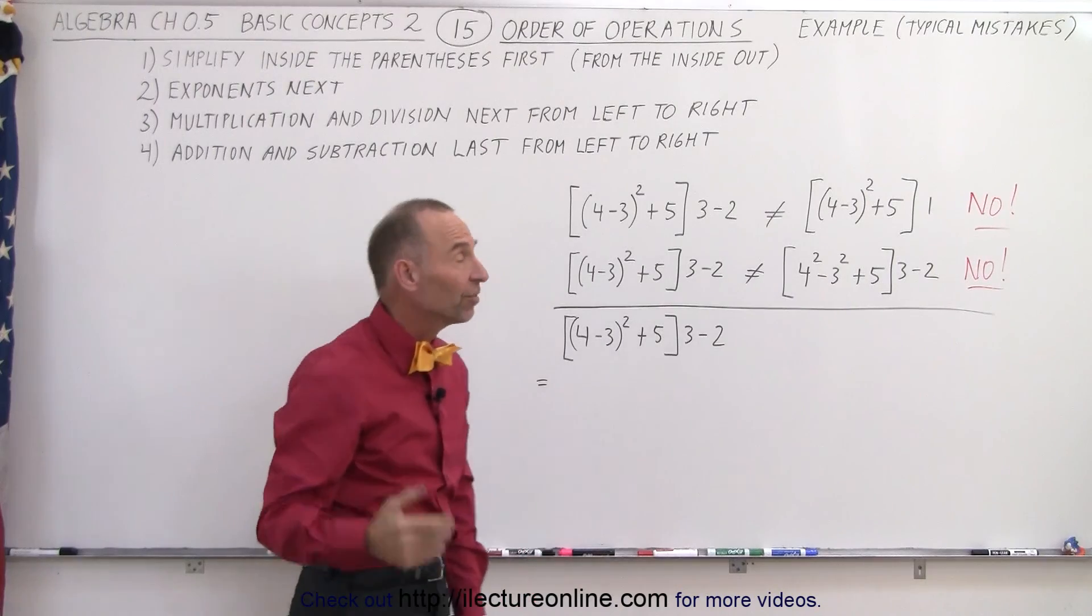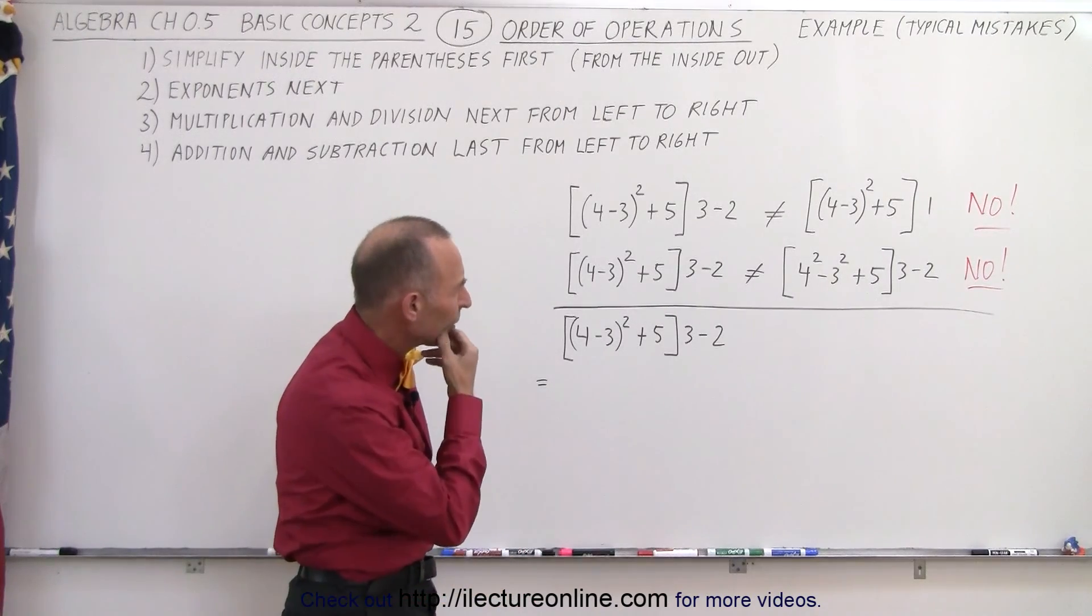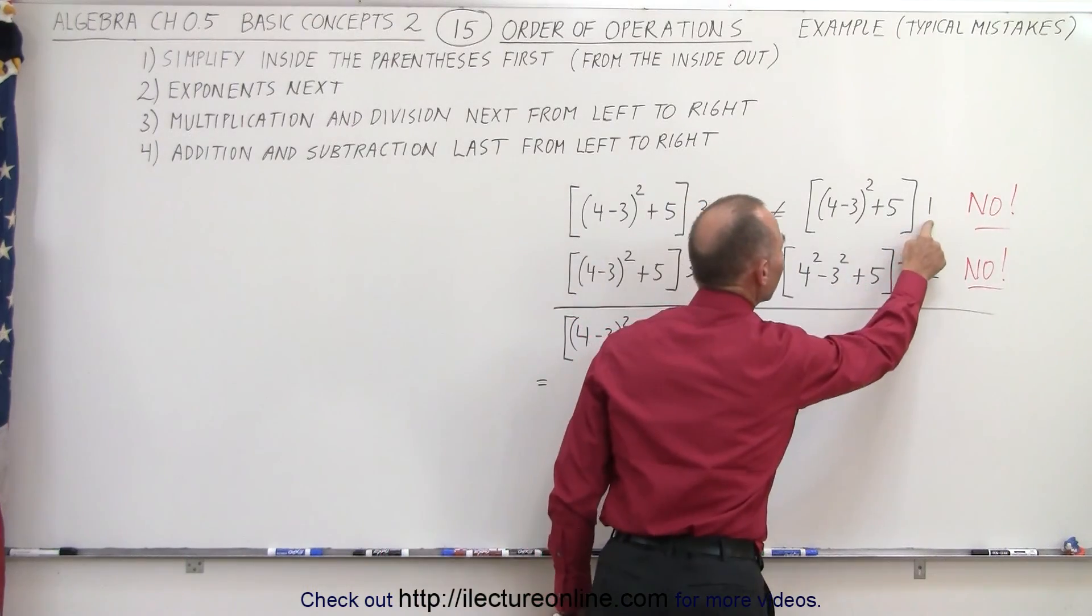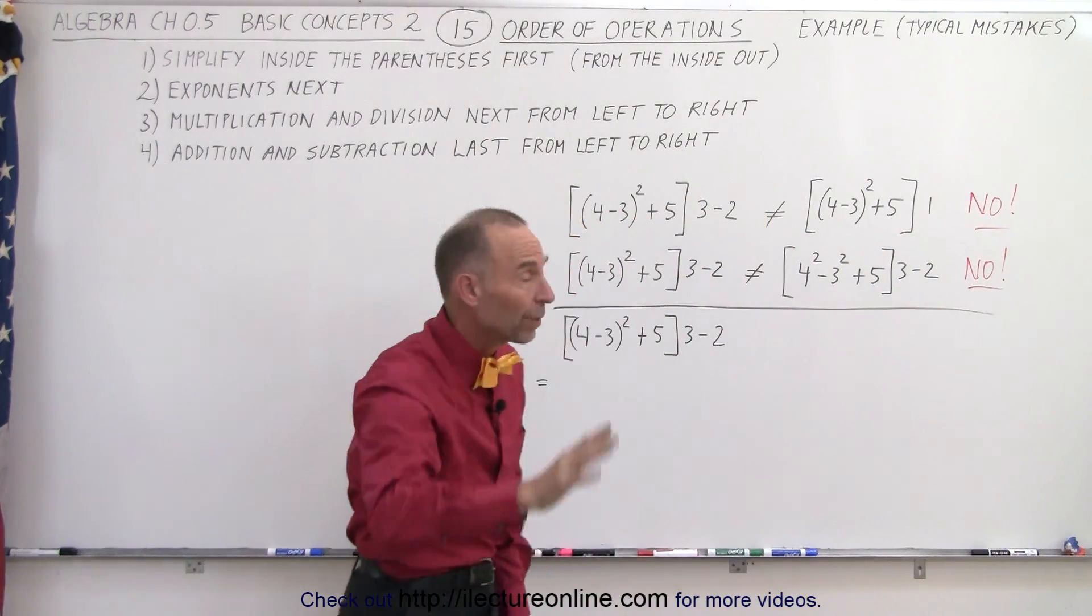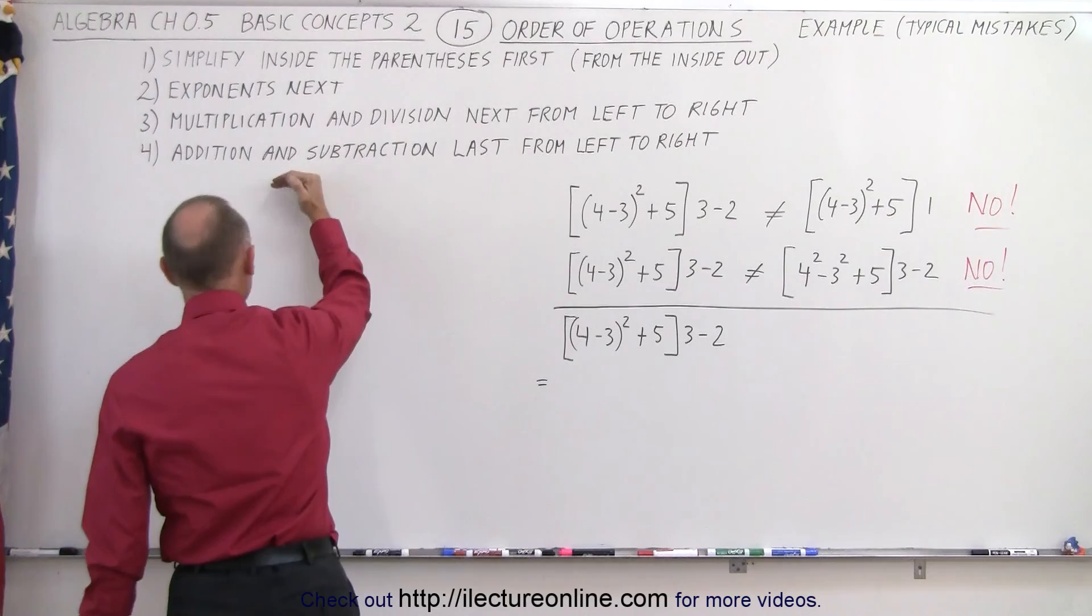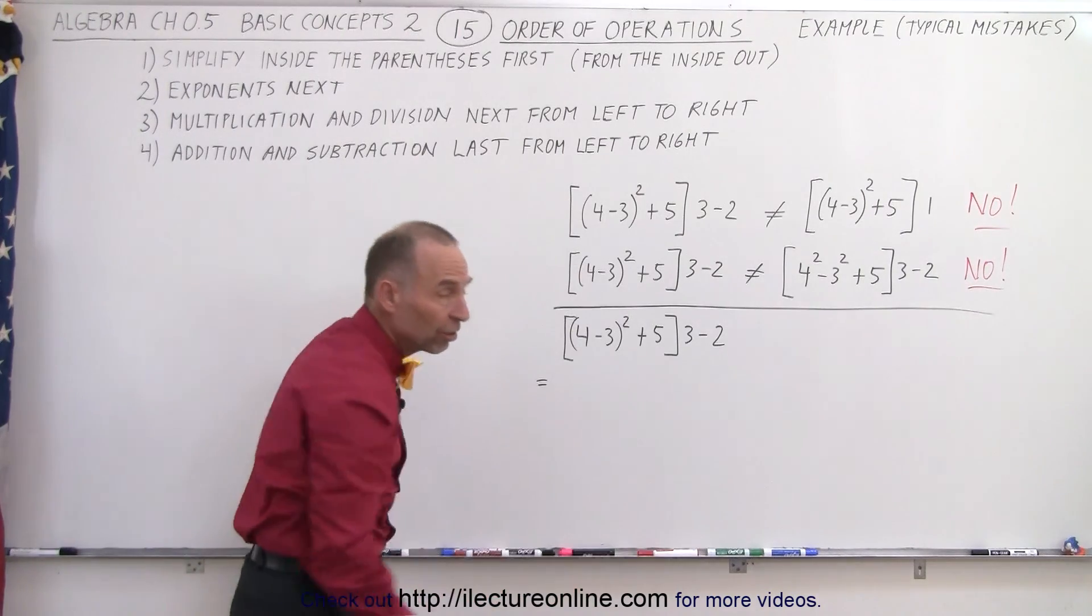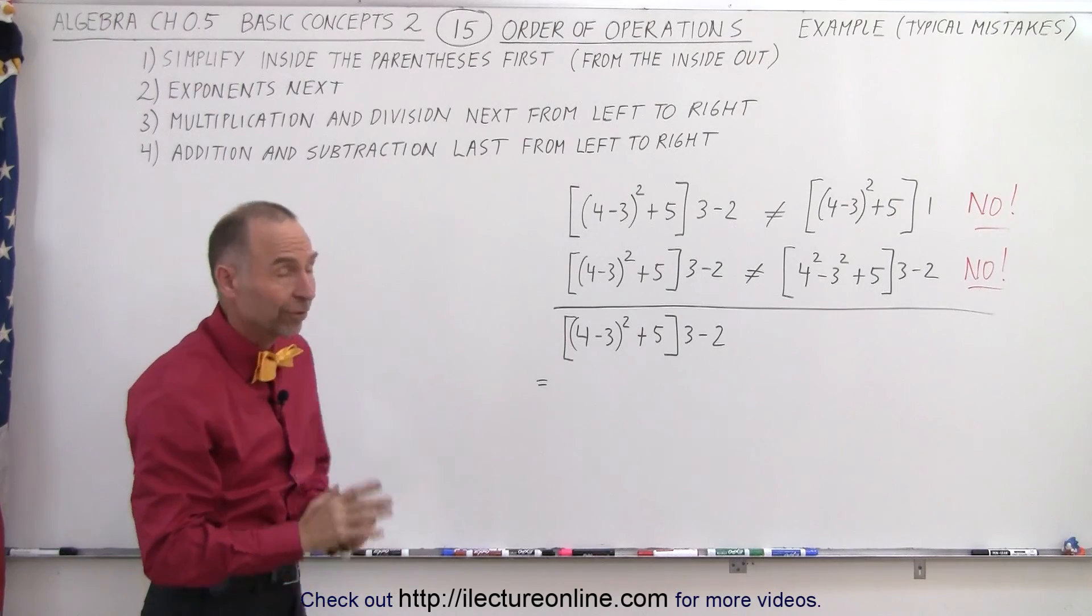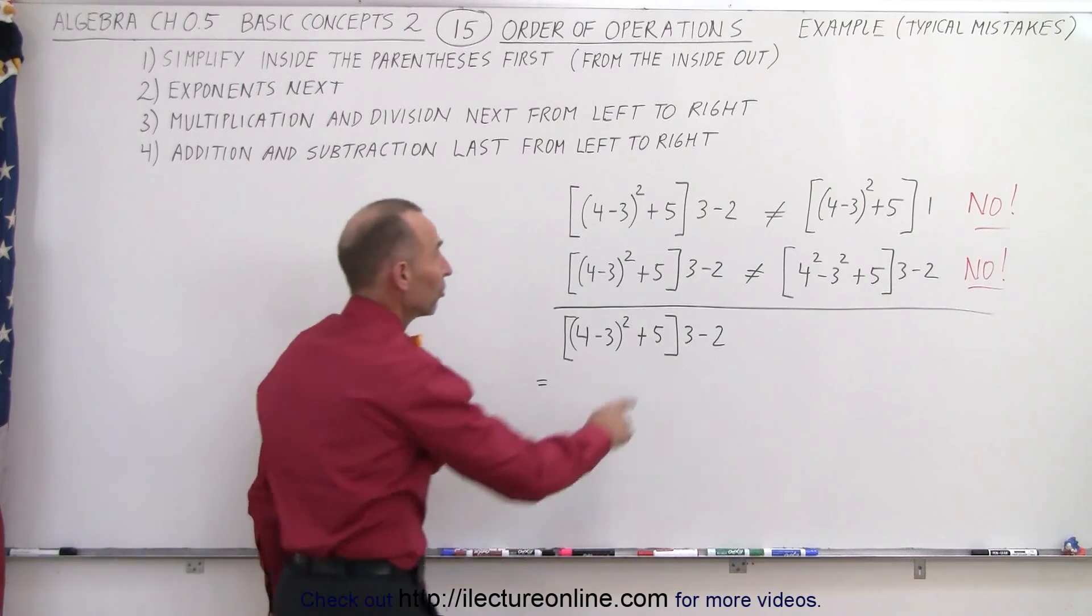Some typical mistakes: you take a look at this and think you can quickly take 3 minus 2 and make that 1. But that is not correct because that's the last step you should take. Don't do any addition or subtraction before you did everything else first. So definitely don't start with subtraction.